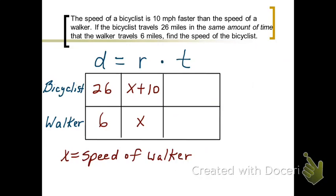And the distance of the walker was 6 miles. And notice it says in the same amount of time. So our time is the same here. We don't really have the time, but we know that the time that the bicyclist went 26 miles is the same as the time that the walker traveled 6 miles. So we've got to figure out some way to come up with an equation here.